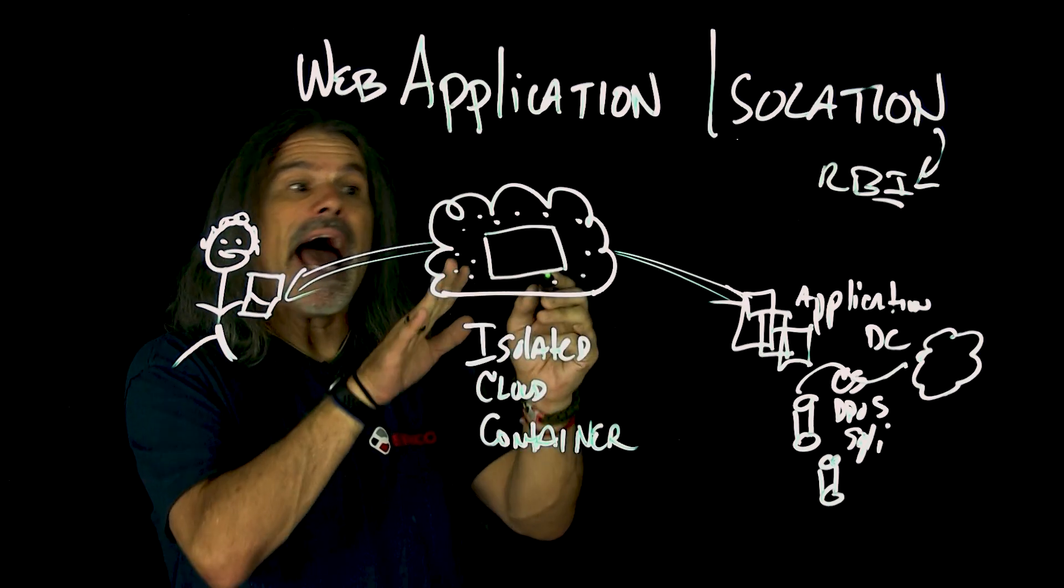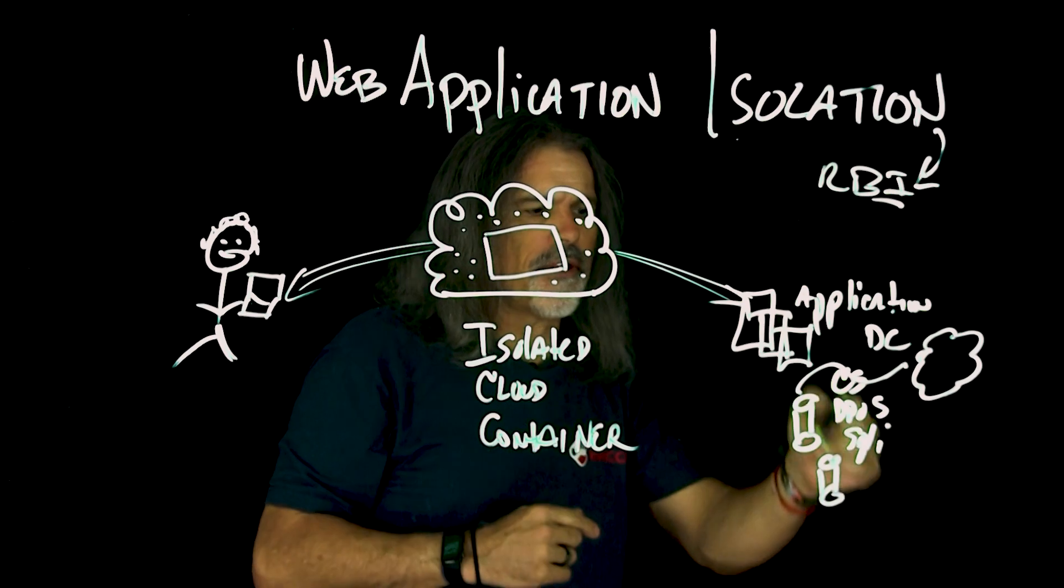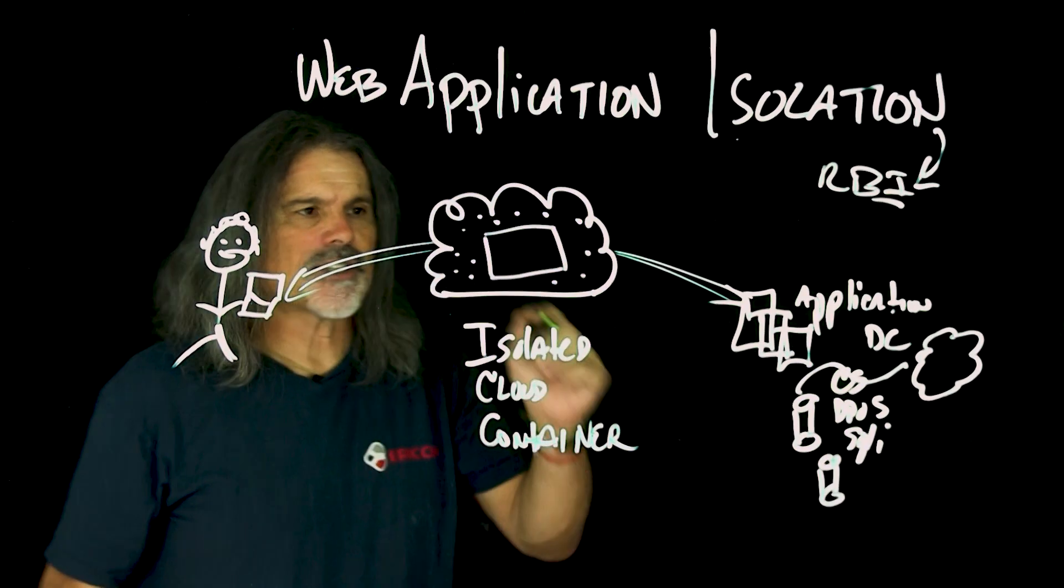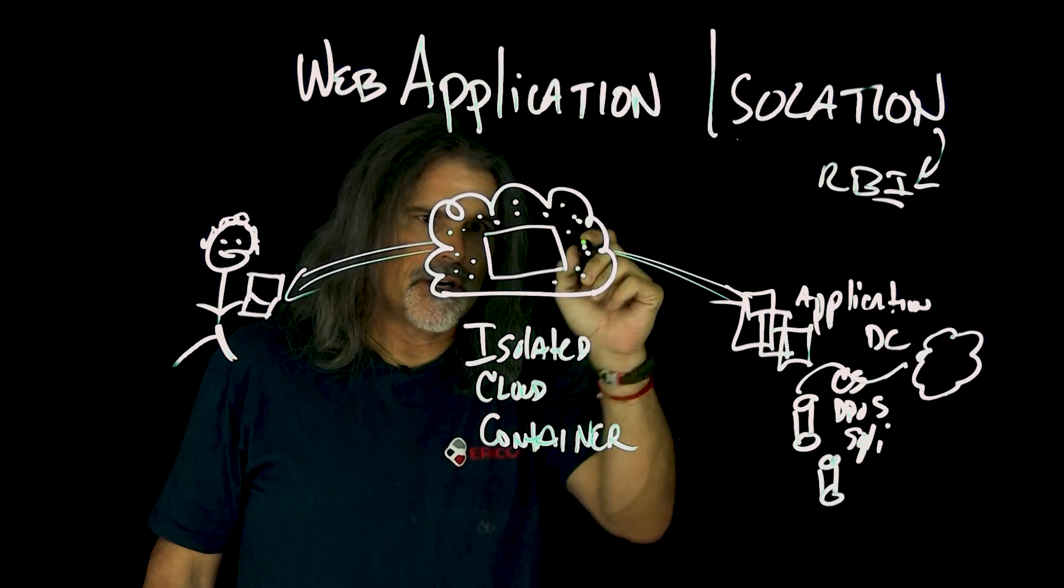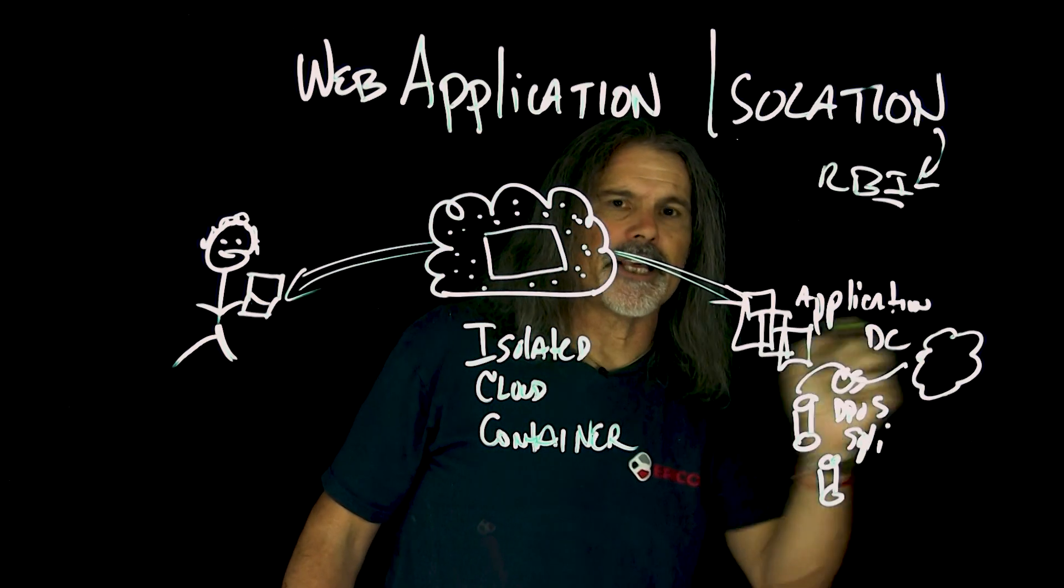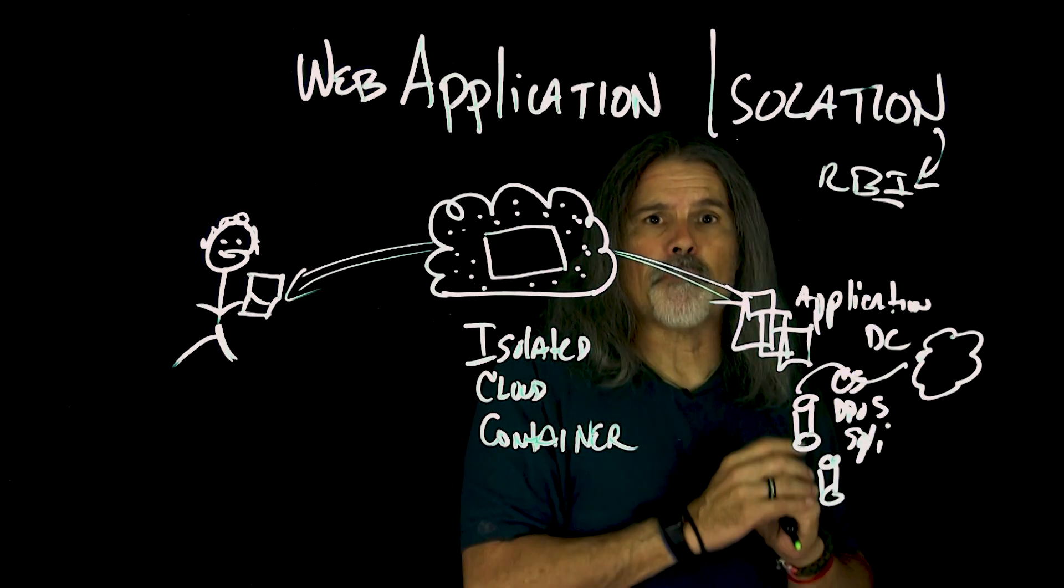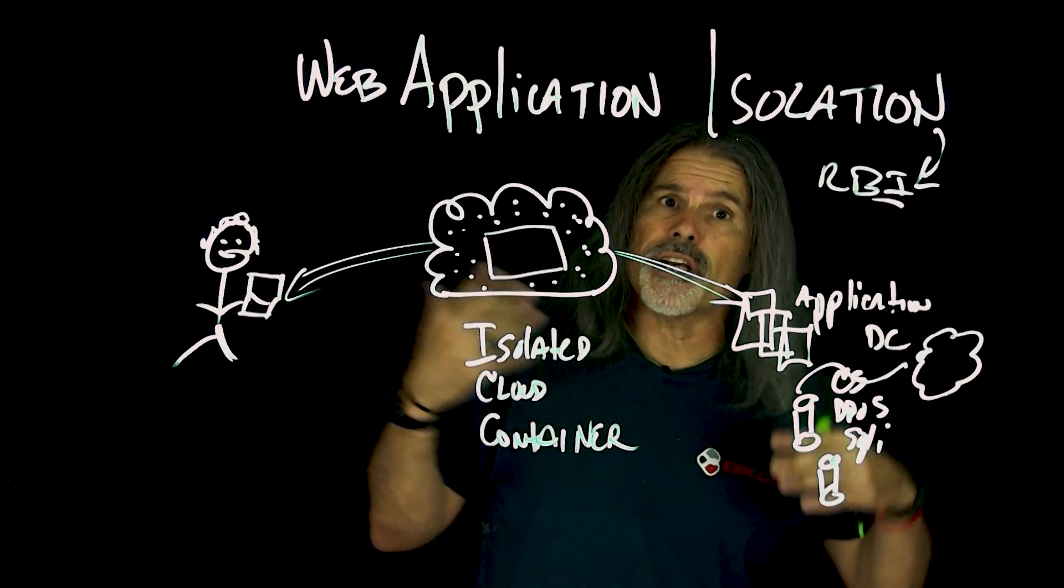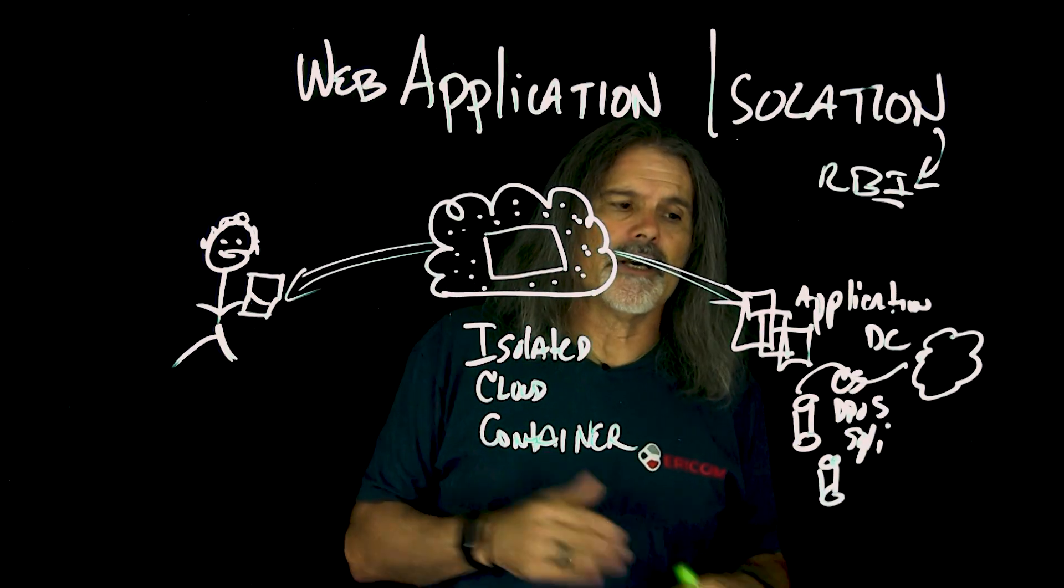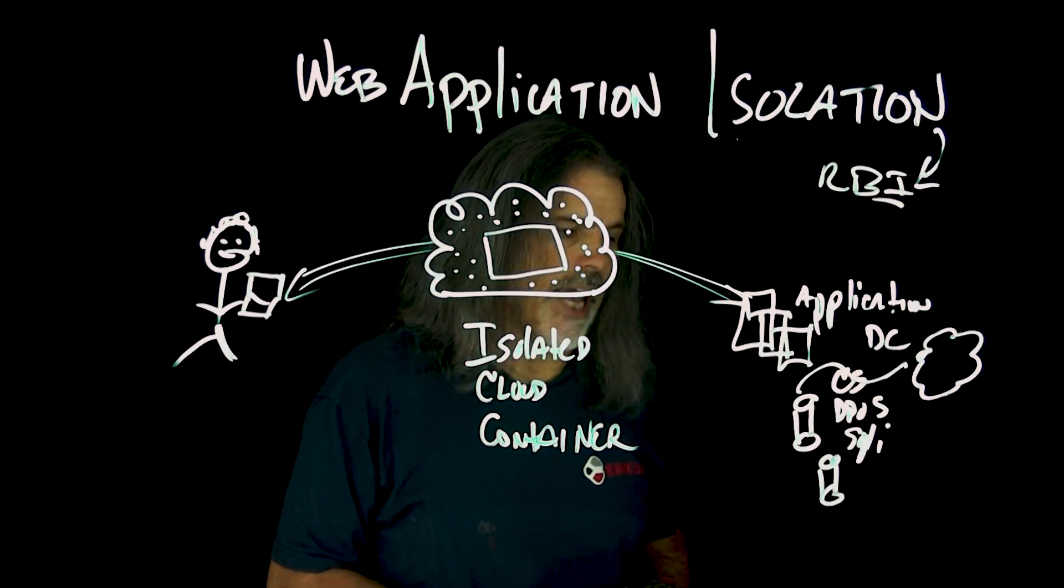If they're wanting to attack the application itself with any number of these attacks, all they're doing is essentially attacking this little cloud container. They're not touching the application at all. So we're protecting all of this back end. If you think of the OWASP top 10, web application isolation can help protect against the OWASP top 10 for web applications.